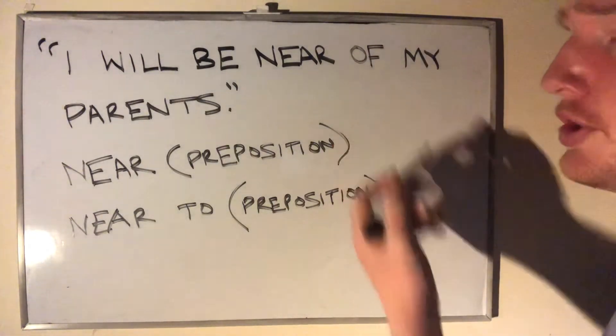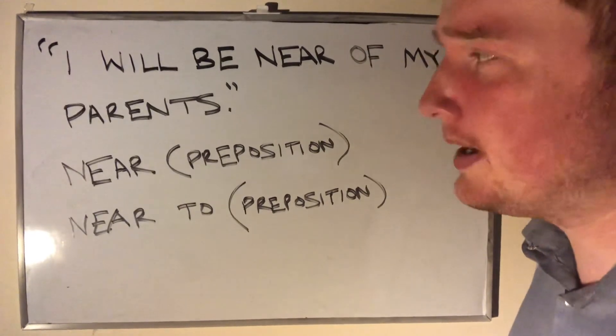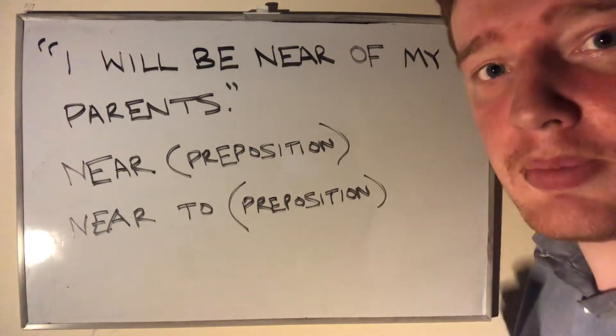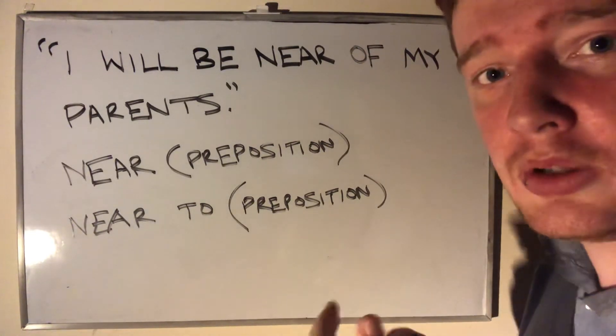So our students may have thought that 'of' would be an appropriate preposition because we can use 'of' to indicate when there is a relationship between two entities, maybe between a whole and a part.